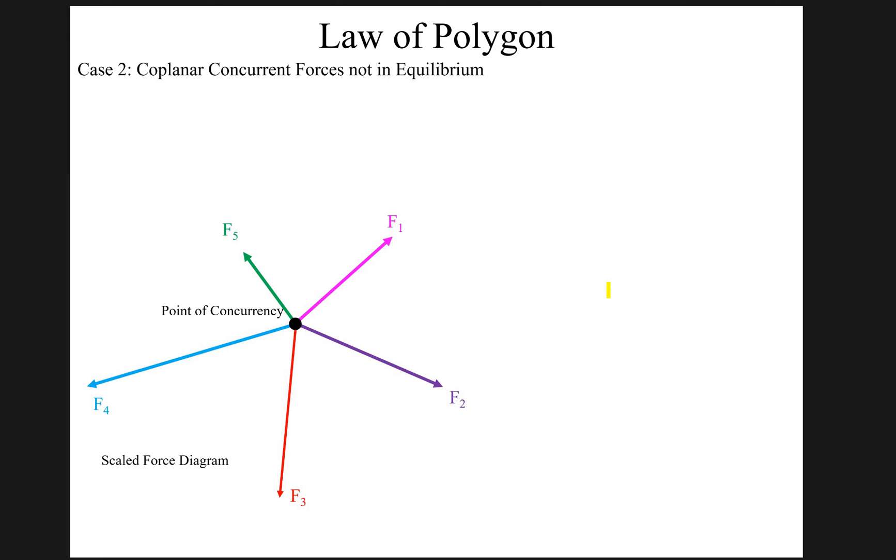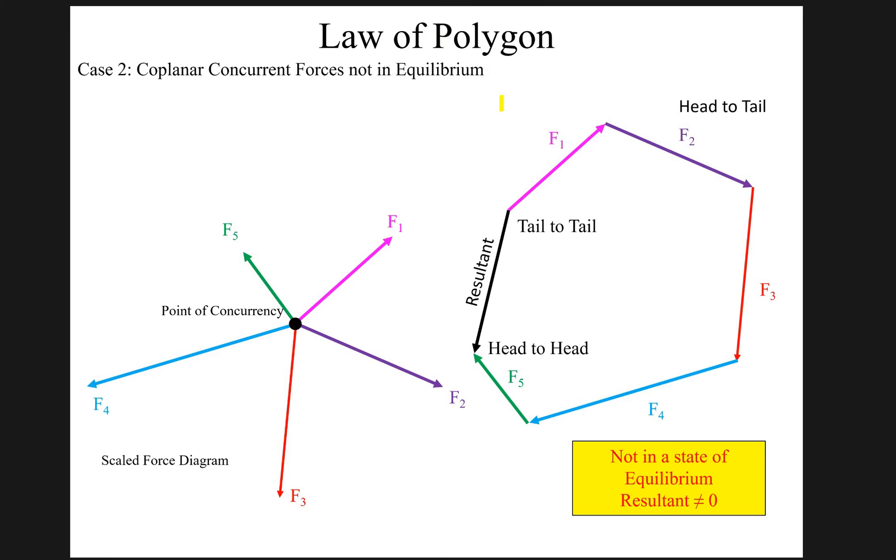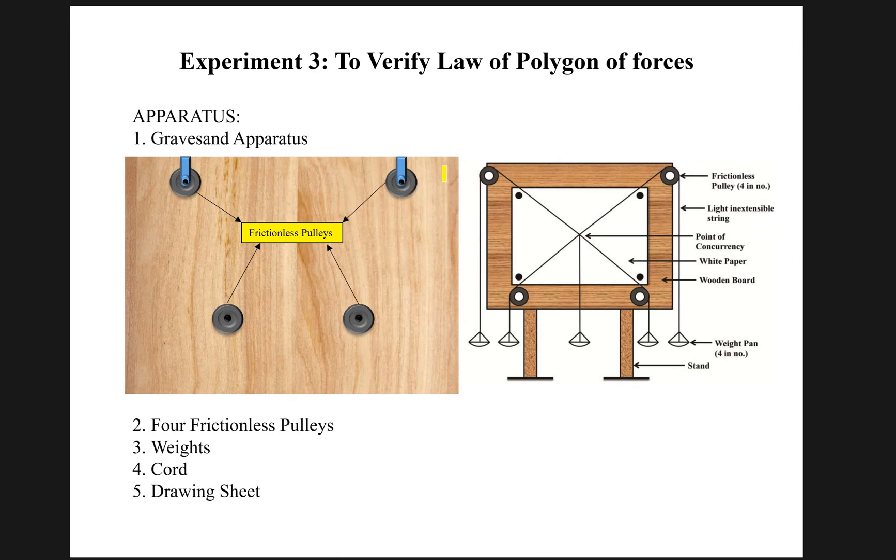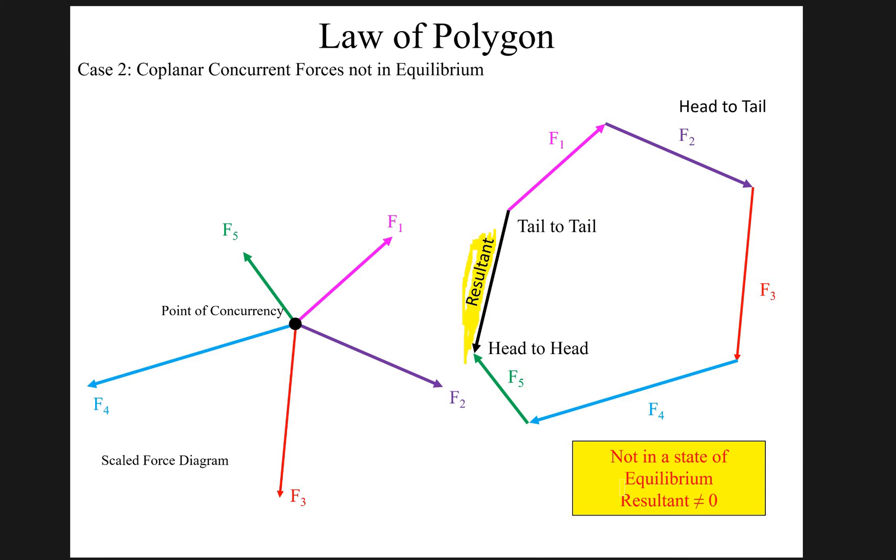In case number two we go for a non-equilibrium system. When the polygon is constructed from a non-equilibrium system, it will never be closed. In this case F1 and F5 are not coinciding and you can see this is the gap. This is representing the value of the resultant, in simple terms also called the error. When you see an error, you should know that the system is not in the state of equilibrium and the resultant will never be equal to zero. It will give you some value. This is the basic aim of this experiment.